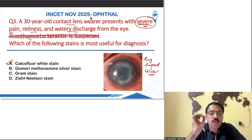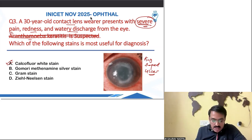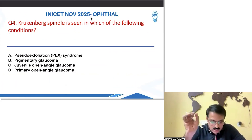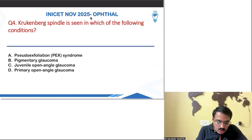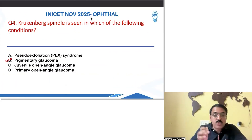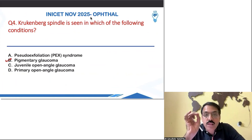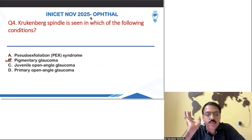Severe pain is a key feature that denotes acanthamoeba keratitis. Next question: Kruckenberg spindle is seen in which condition? The answer is pigmentary glaucoma — also called pigment dispersion syndrome. I had done this in last minute questions as an image-based question also. Very straightforward question.